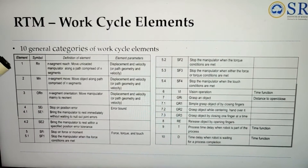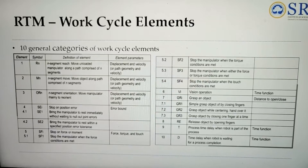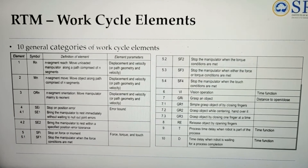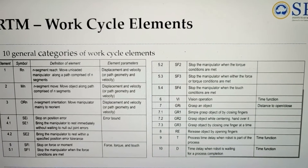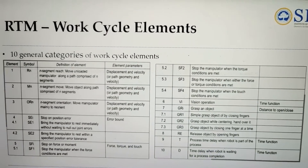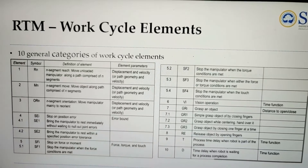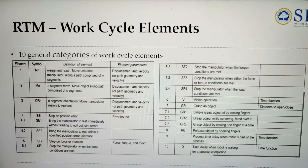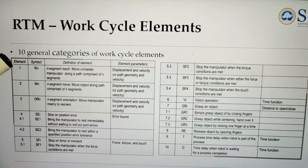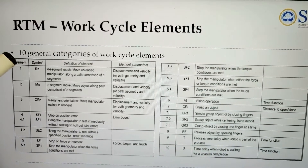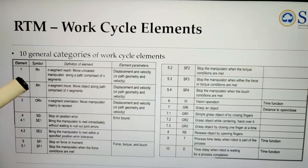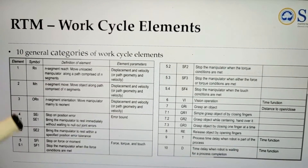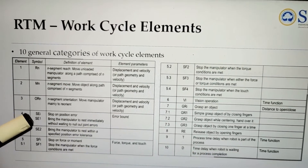To recap, the work cycle elements of the RTM method are classified as motion elements, sensing elements, end effector elements, and delay elements. There are 10 general categories of work cycle elements, each denoted with different symbols.